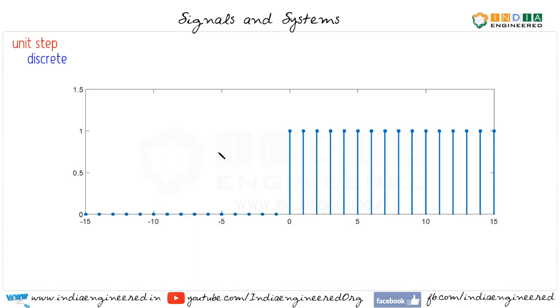This signal is the discrete time unit step signal. Its value is 0 for n less than 0 and it is 1 for n greater than or equal to 0.